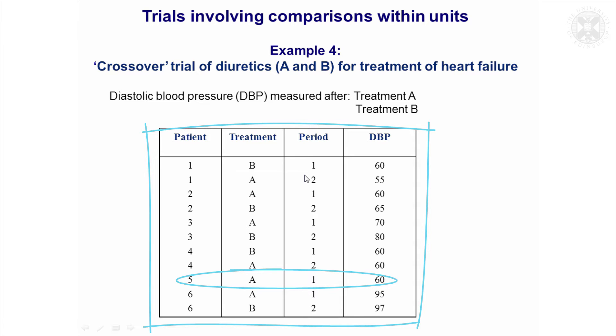You can hopefully immediately see that if you tried doing a paired t-test on that, you'd lose the information on patient five.